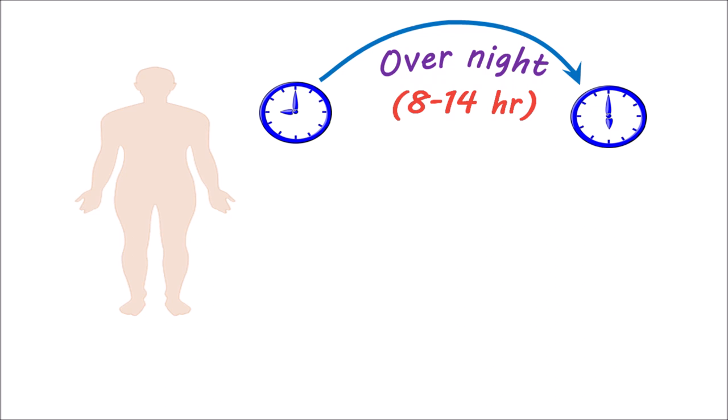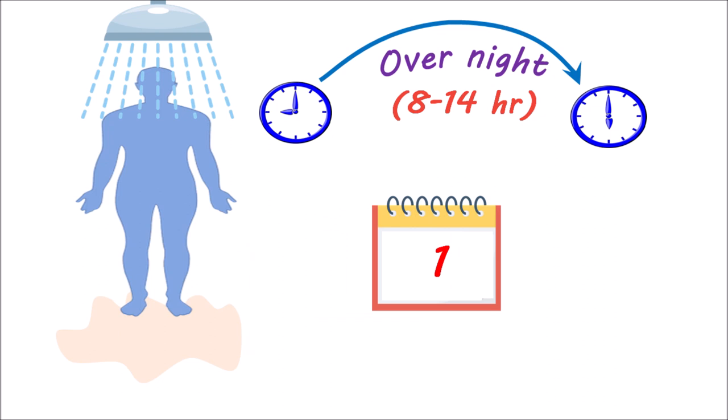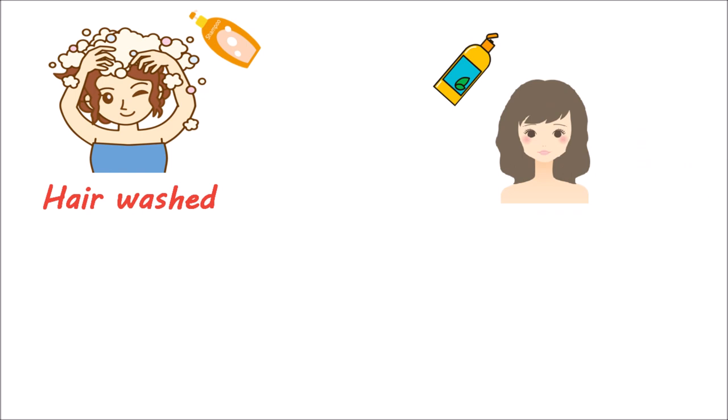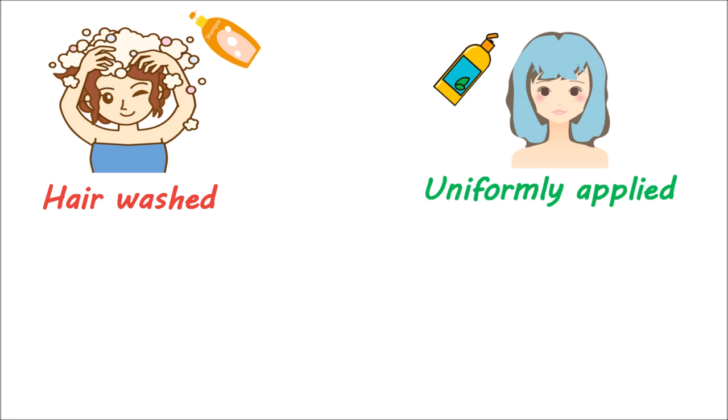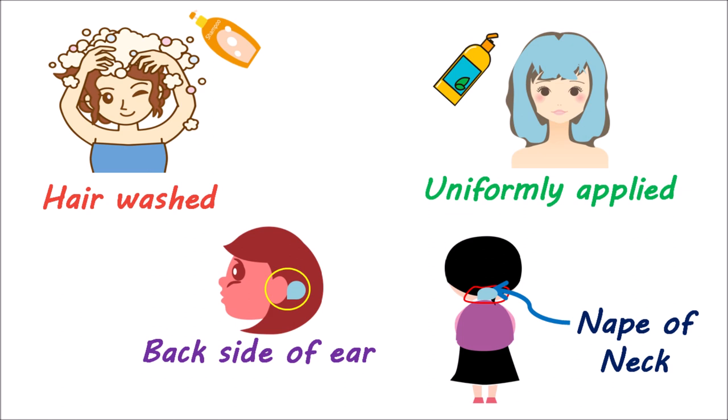If necessary, the cream can be reapplied after one week of treatment. For the treatment of head lice, the contact time is very short. Initially, the hair should be washed with a shampoo, preferably without conditioner. After drying the hair, permethrin 1% lotion should be applied uniformly to the scalp and hairlines. Special focus should be given to children to cover areas more prone to infestation, such as behind the ear and the nape of the neck. Permethrin should be left on the scalp and hair for around 10 minutes, after which it should be thoroughly washed.